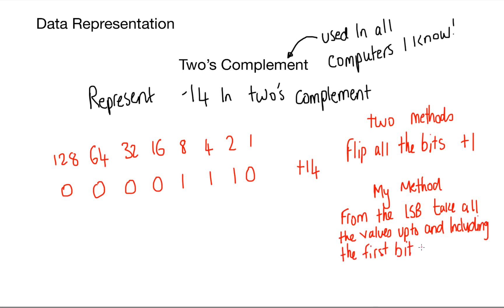My method is starting from the least significant bit, take all the values up to and including the first 1, and flip the rest. Let's have a look at this example. I will take the 0 and the 1, because that's up to and including my first 1. Then I flip the bits—if I have a 1, I'll flip it to 0; if I have a 0, I'll flip it to 1.